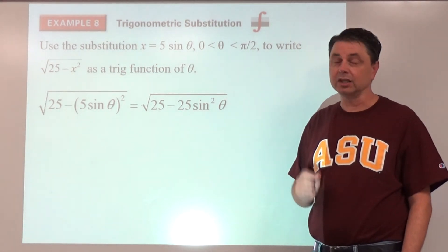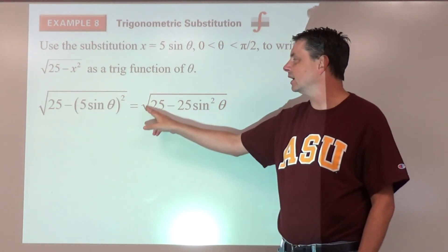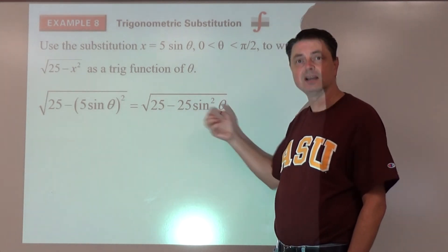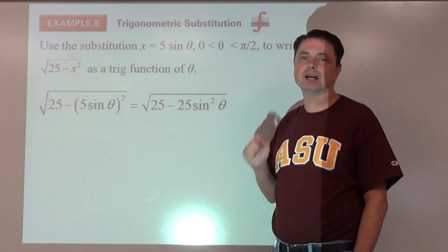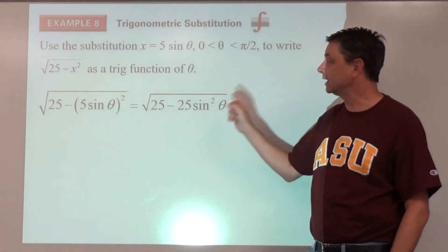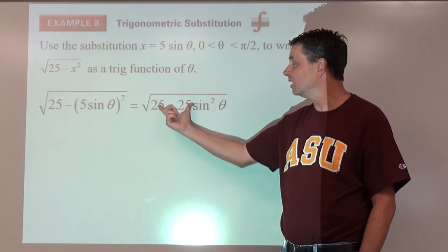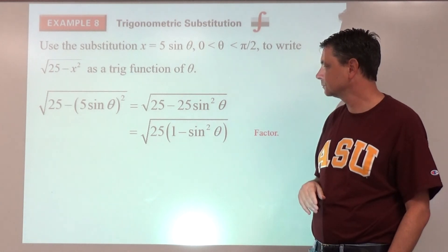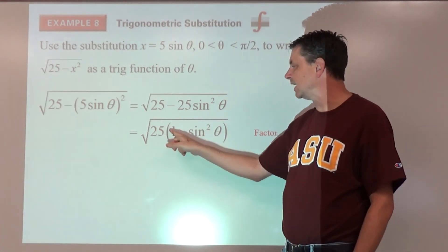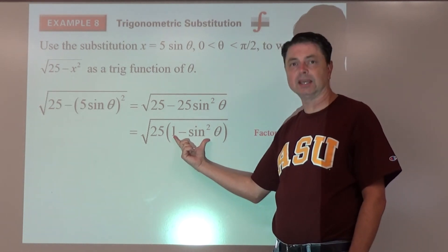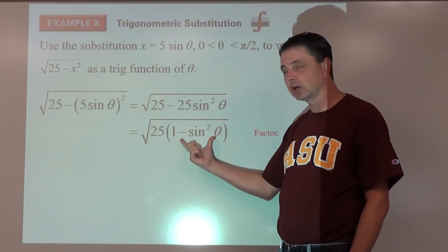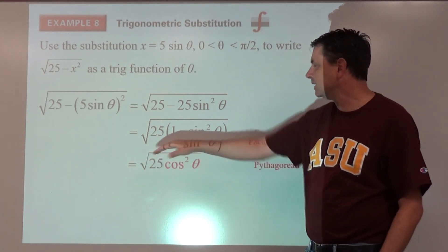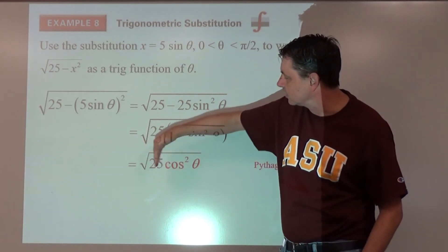Inside the root we have twenty-five minus twenty-five sine squared theta. You cannot distribute the square root over the parts — you can't split a function that way. But you can factor: factor out twenty-five inside the root, giving twenty-five times one minus sine squared theta. By the Pythagorean identity, one minus sine squared theta equals cosine squared theta.